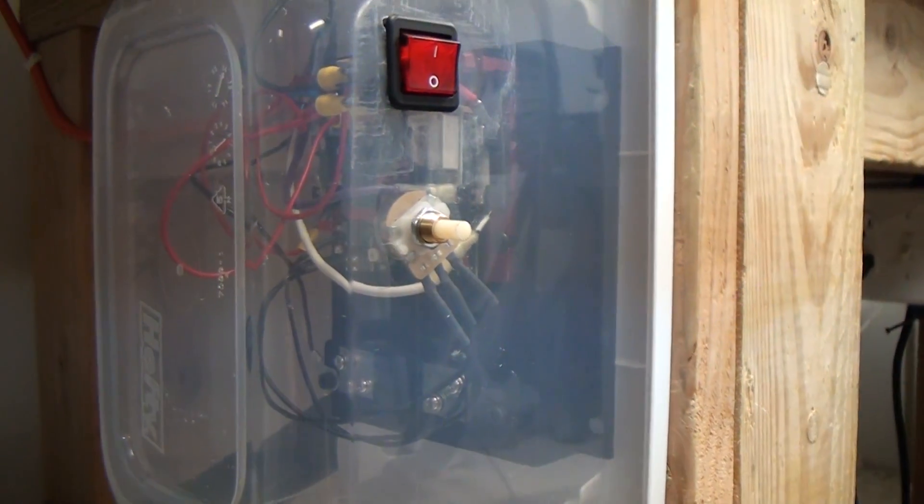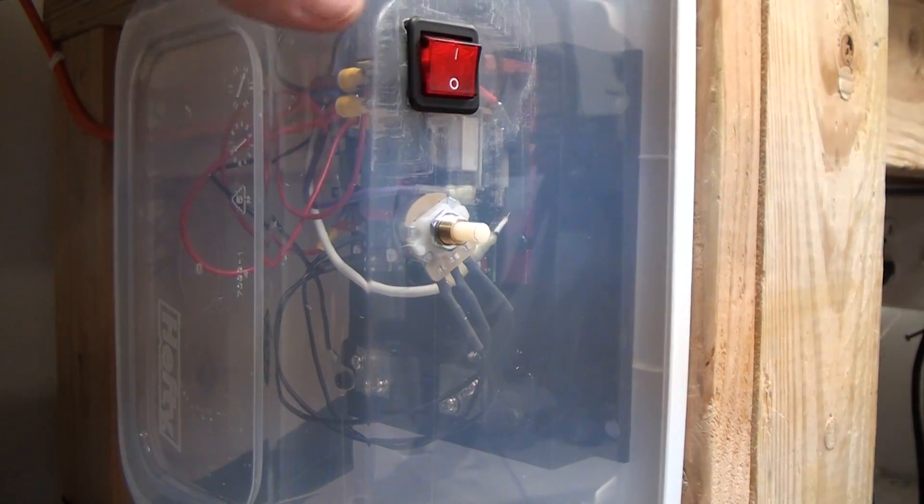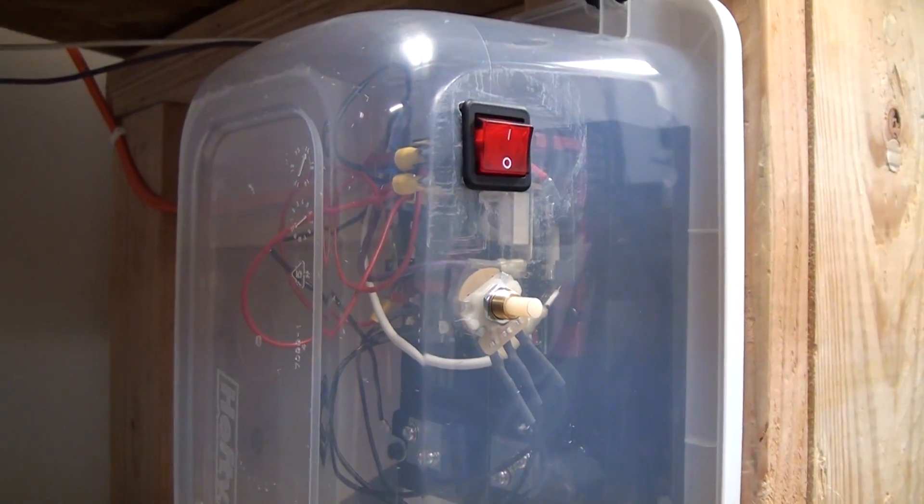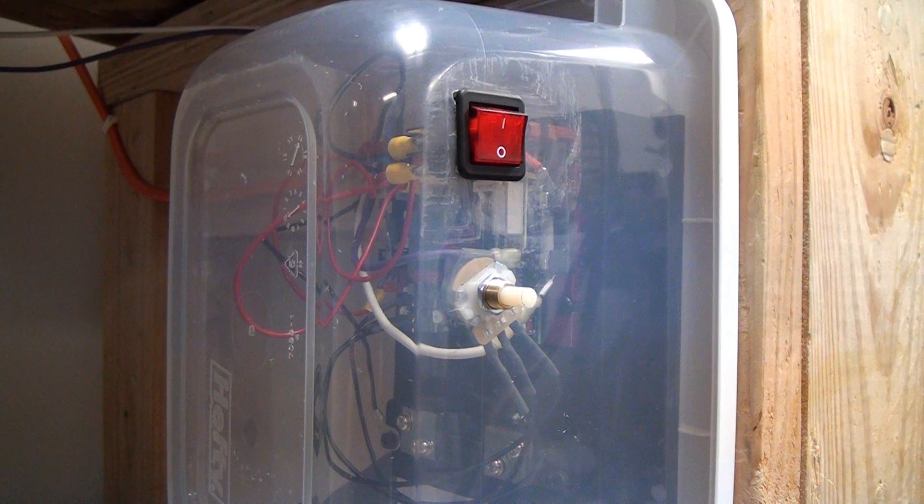I drilled some vent holes in the top and bottom, all the wires coming in and out of a couple of holes over there on the backside that you can't see. And then just a switch that I picked up at Home Depot. And of course the potentiometer—this is all temporary.